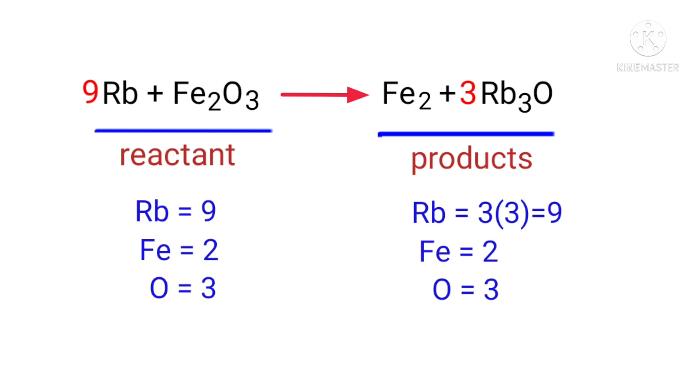The equation is now balanced. There are nine rubidium atoms, two iron atoms, and three oxygen atoms on both sides.